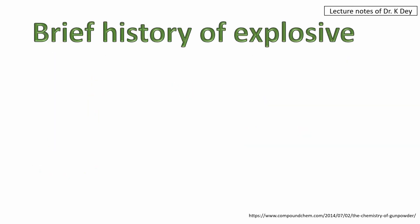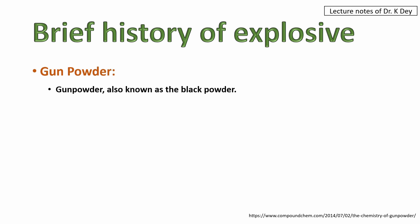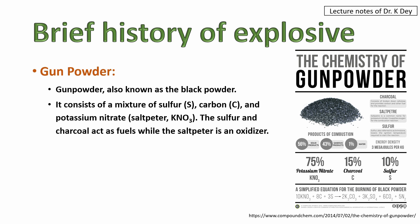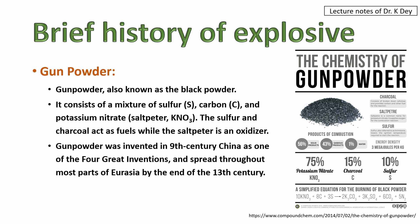Now let's look into the history of explosives. Gunpowder, also known as black powder, consists of a mixture of sulfur, carbon, and potassium nitrate (saltpeter). The sulfur and charcoal act as fuels while the saltpeter is an oxidizer. Gunpowder was invented in the 9th century China as one of the four great inventions and spread throughout most parts of Eurasia by the end of the 13th century.